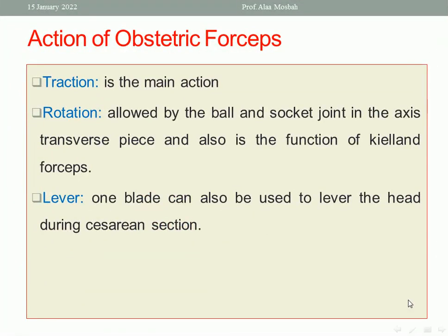What is the action of obstetric forceps? There are three main actions: traction, rotation, and acting as a lever. Traction is the main aim of forceps. Rotation is allowed by the pole-and-socket joint in the axis traction piece and also in the function of Kielland forceps. A single blade can also be used to lever the head during caesarean section, not for vaginal delivery.